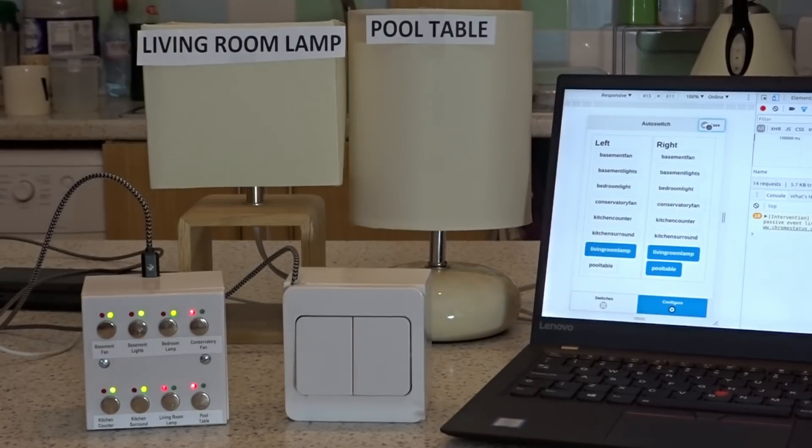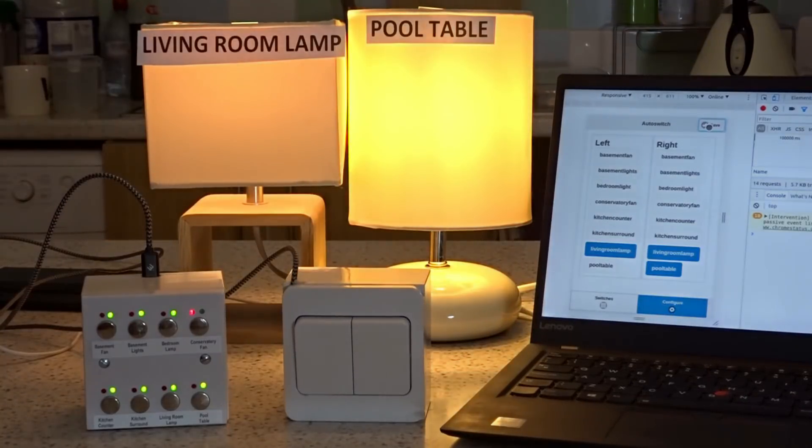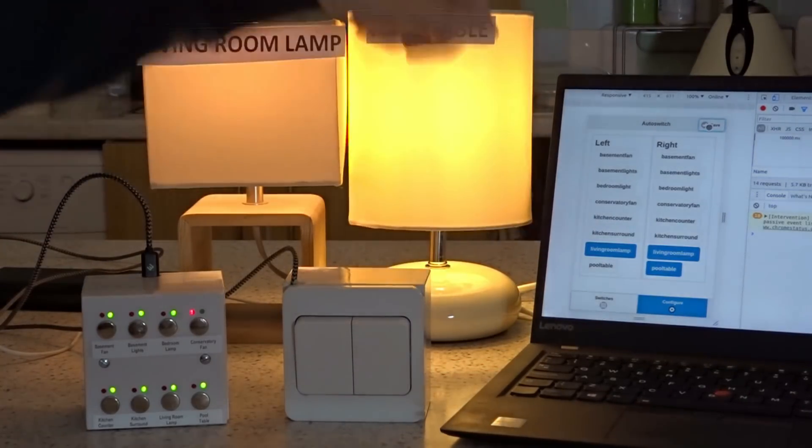Okay, so now if I flip the right hand side switch, both lamps will come on and that left switch will flip again because the living room lamp was tied to it.